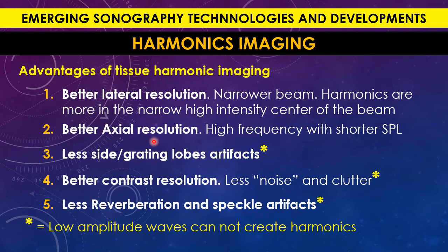Next, better axial resolution — because the high-frequency harmonic pulse has a shorter spatial pulse length, which yields better axial resolution. With better lateral and better axial resolution together, we get better overall spatial resolution and a better image. Additionally, there are fewer grating lobe and side lobe artifacts. Grating lobes and side lobes are very weak, so they are not able to create harmonics, meaning the harmonics image will have little or no grating lobe artifacts.